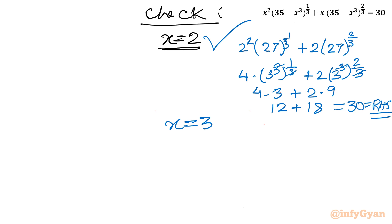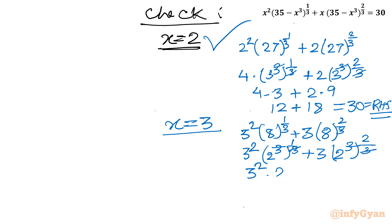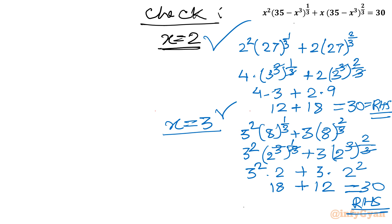Now for x equals 3: LHS is 3 squared times (35 minus 27) to the power 1 over 3, plus 3 times (35 minus 27) to the power 2 over 3. That is 9 times 8 to the power 1 over 3 plus 3 times 8 to the power 2 over 3. Since 8 is 2 cubed, we get 9 times 2 plus 3 times 4, which is 18 plus 12 equals 30, which equals RHS. This answer is also true and verified.